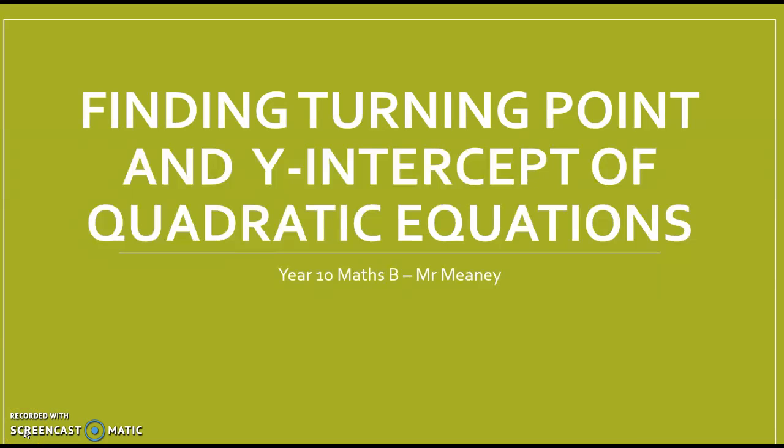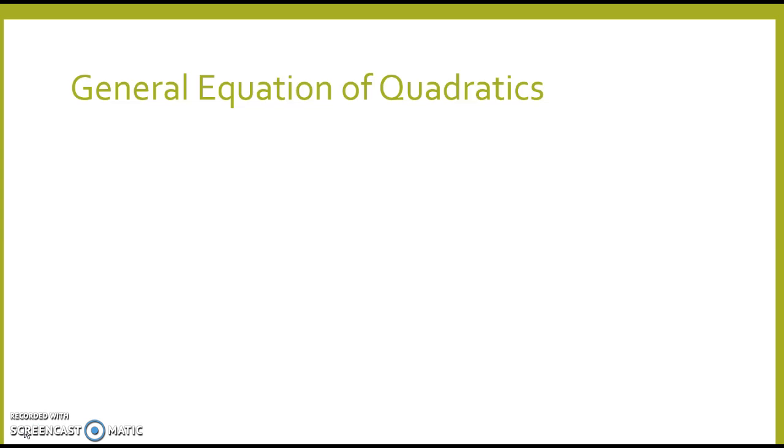Hi. This tutorial is going to look at finding both the turning point and the y-intercept of quadratic equations. Let's remind ourselves about the general quadratic equation, which is in this form: y equals a outside of x minus h all squared plus k. You'll recall that a is the dilation factor, and it's dilated in the y-axis. h is how far it's moved either to the left if it's a negative number, or to the right if it's a positive number. And k is the translation up and down.